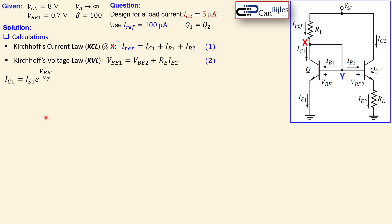We know that IC1 is related by the exponential expression: IC1 = IS1 · exp(VBE1 / VT), where IS is the saturation current dependent on physical dimensions and temperature, and VT is the thermal voltage, approximately 26 mV at room temperature (about 27°C). This is an approximation — the exact expression is more complicated, but this works well for most cases.